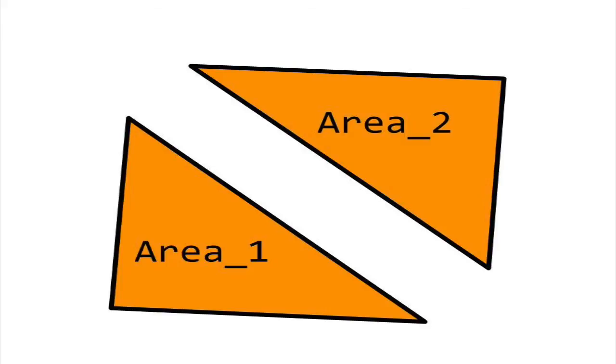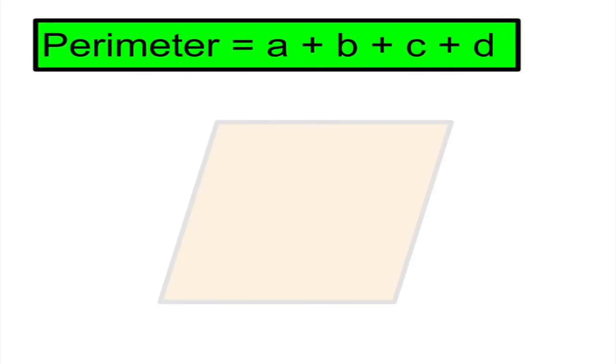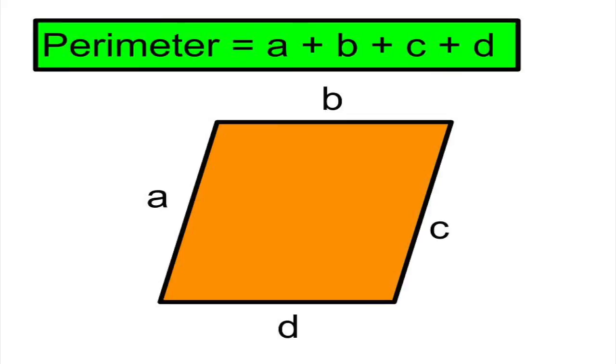Finally, we add the areas of each triangle to get the total area of the quadrilateral. To get the perimeter, we simply add up the side lengths as we do in triangle.